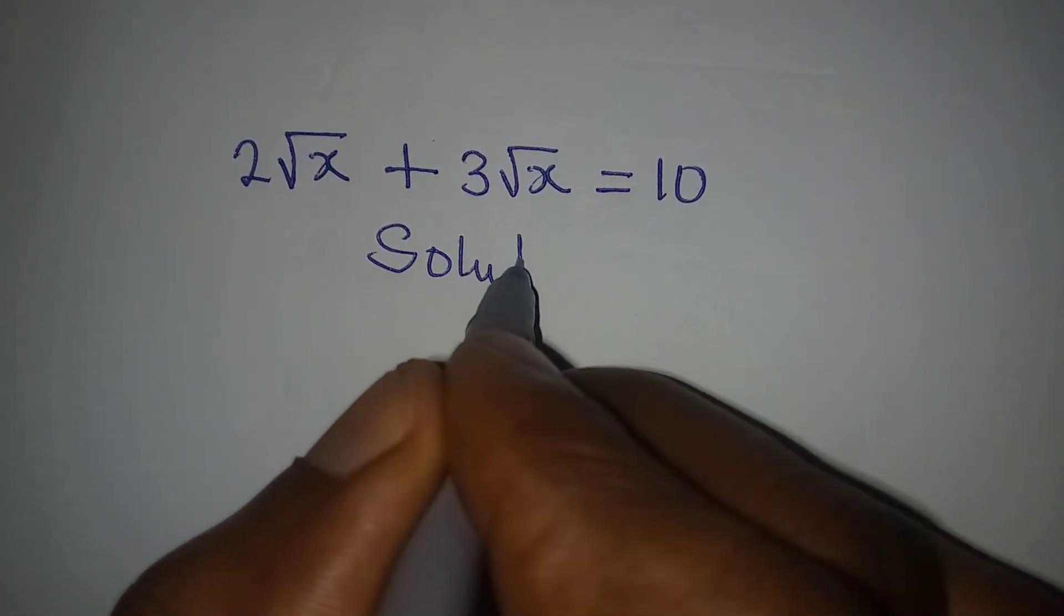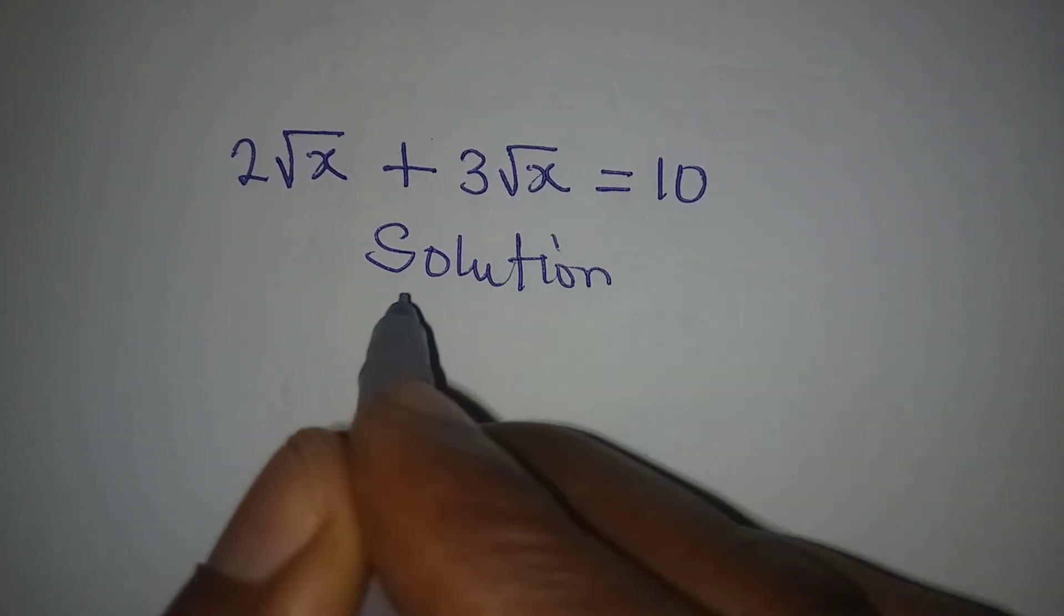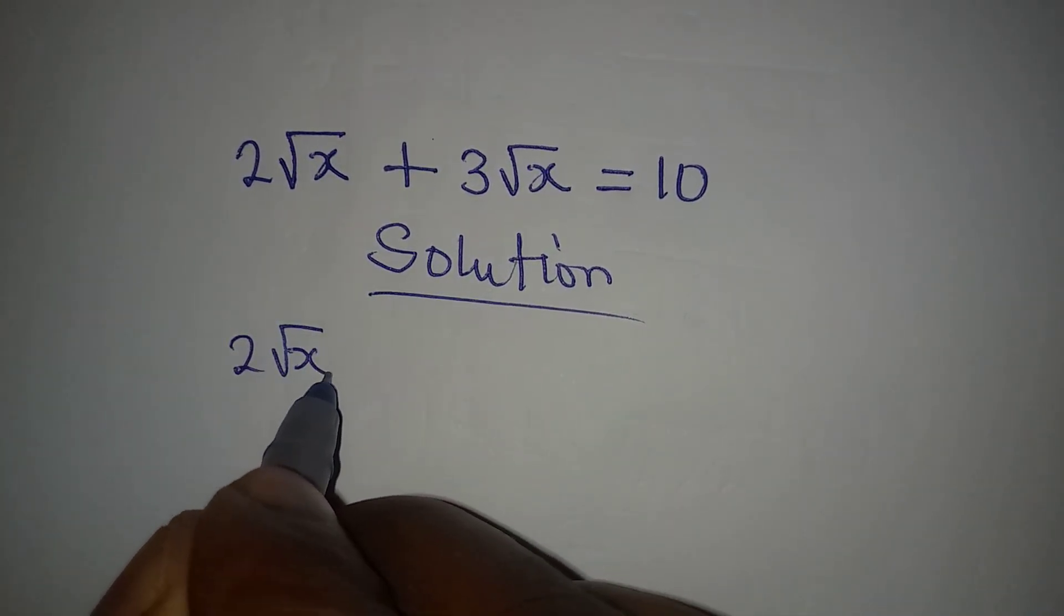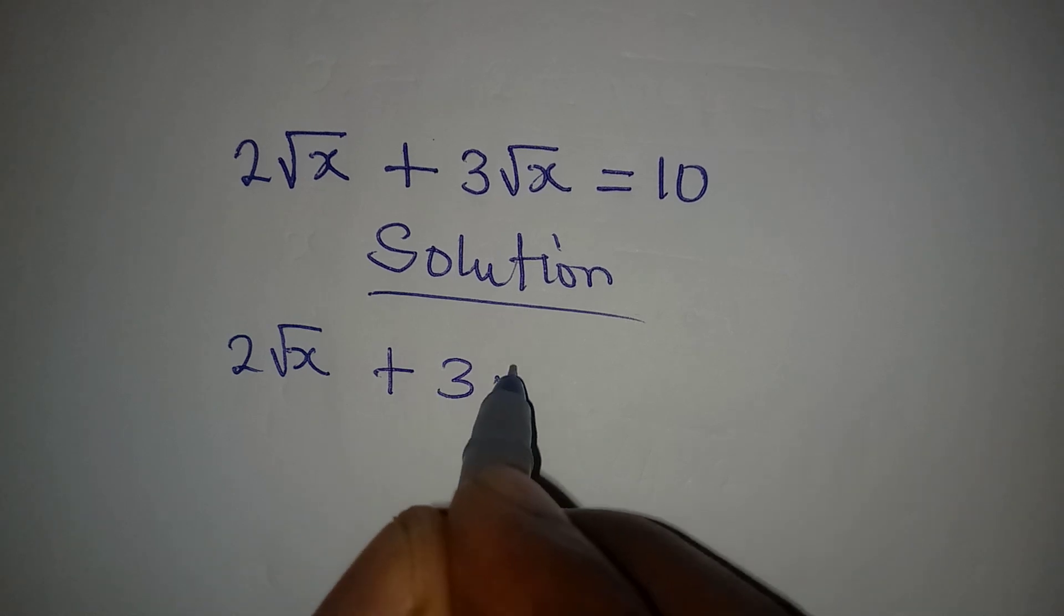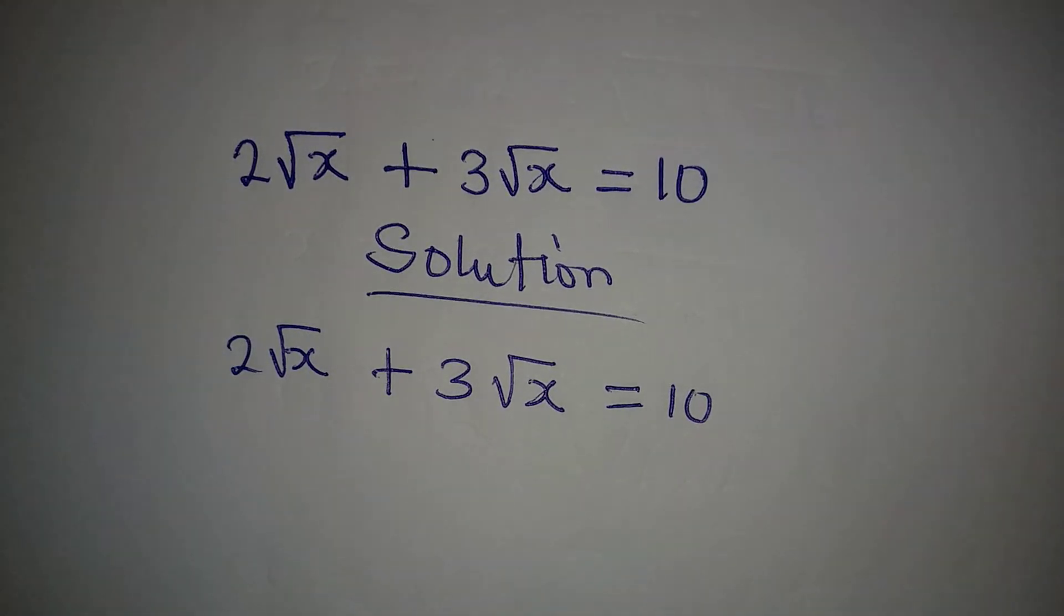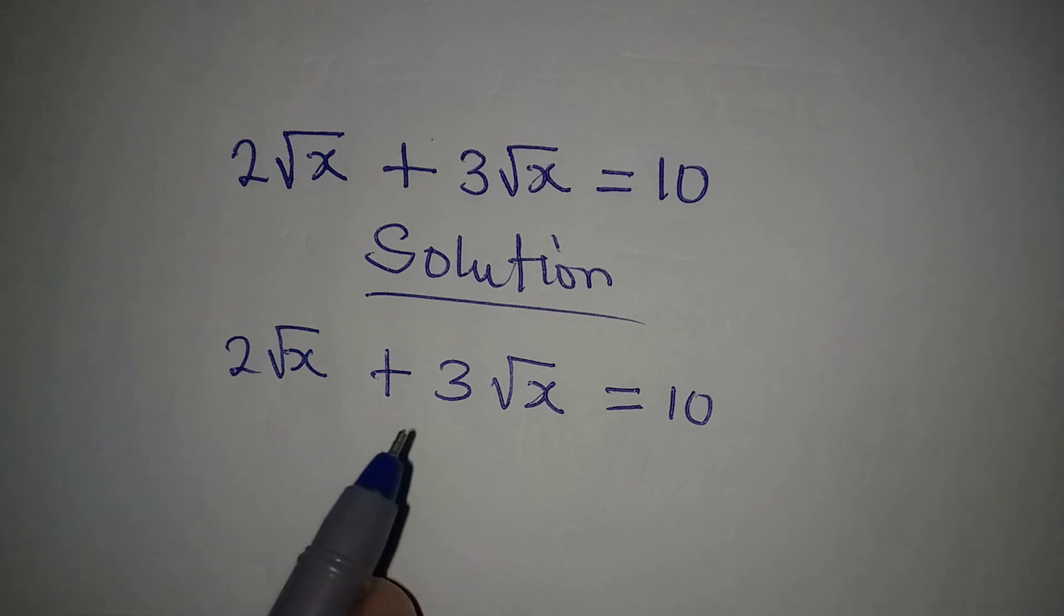Hello everyone, let's deal with this problem quickly: 2√x + 3√x = 10. By the way, how do we deal with this? Simple, right? 2√x plus 3√x - they are the same root, so we can operate on them.